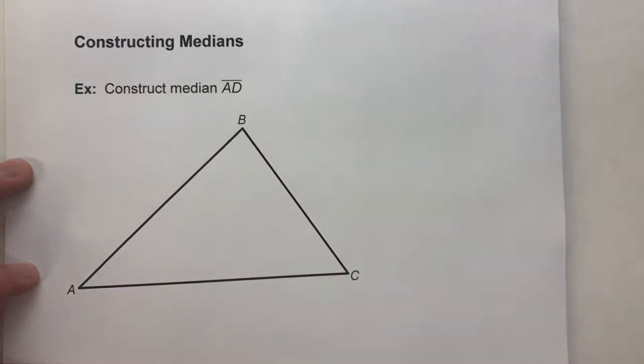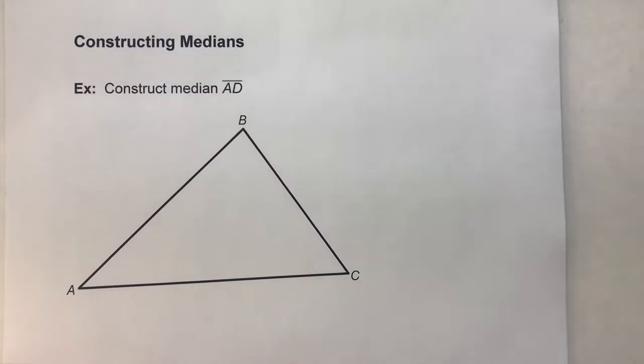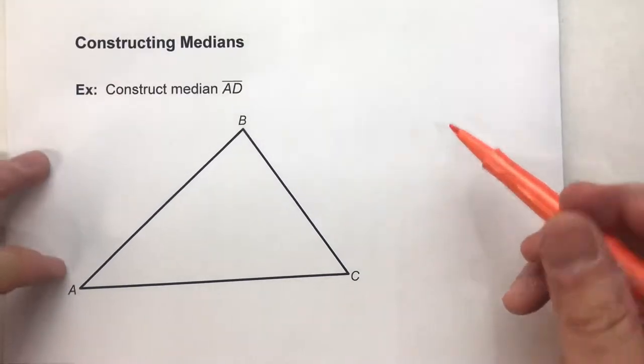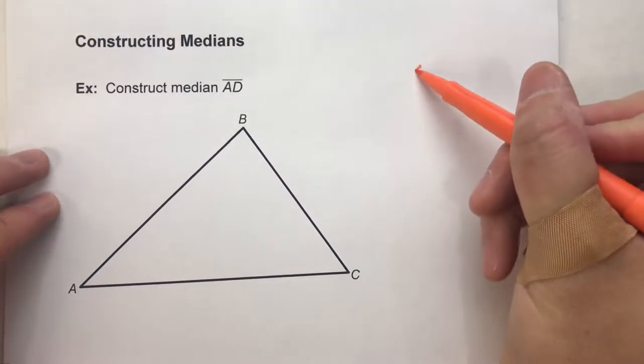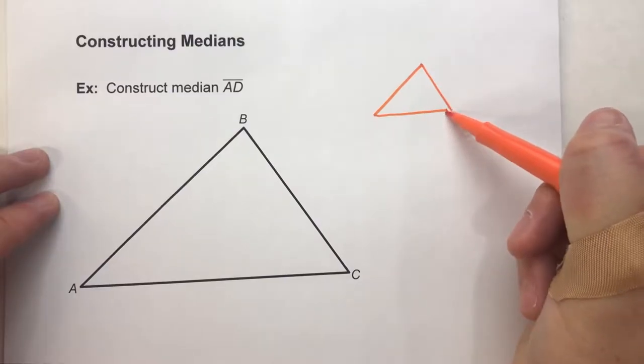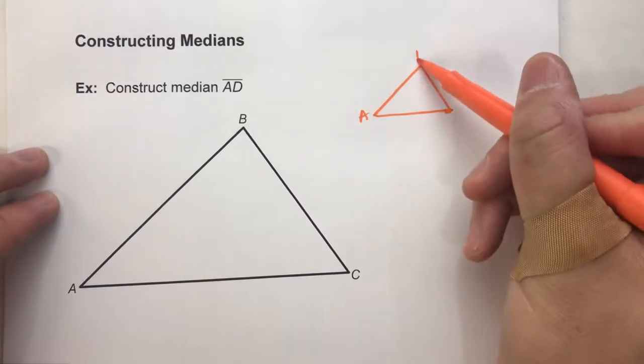But before we do the construction, let's do a little sketch so we know what we're doing. I'm going to sketch over here, a rough sketch of this triangle right here. ABC.